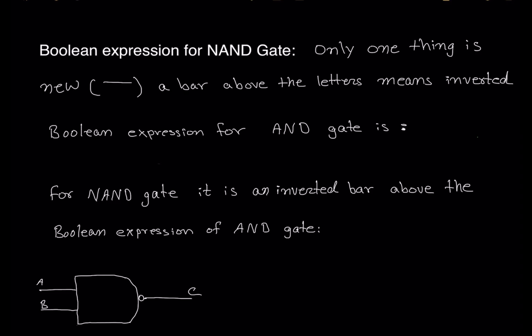The Boolean expression for a NAND gate — we talked about the AND gate earlier this week. The Boolean expression of the AND gate is A dot B, meaning input A and input B gives output C, or simply AB equals C. That was our Boolean expression for the AND gate.